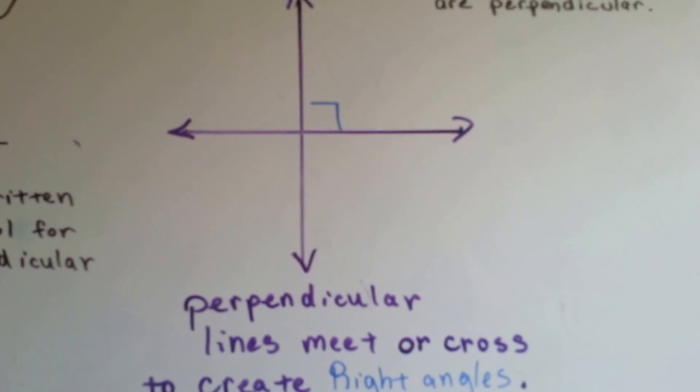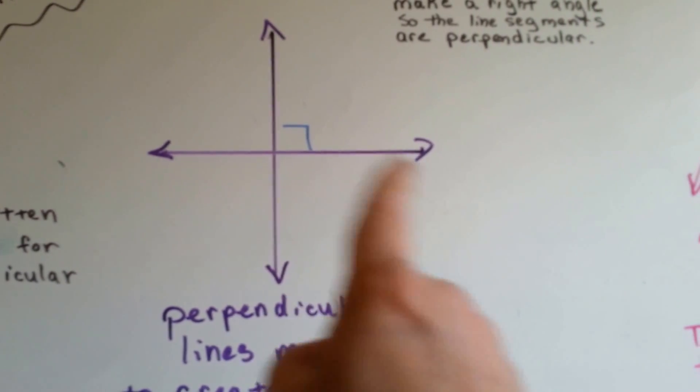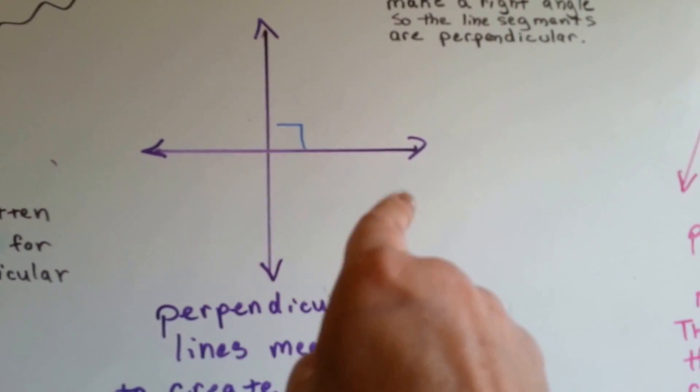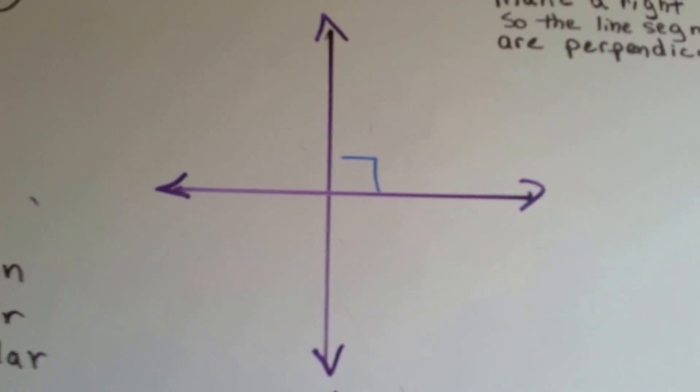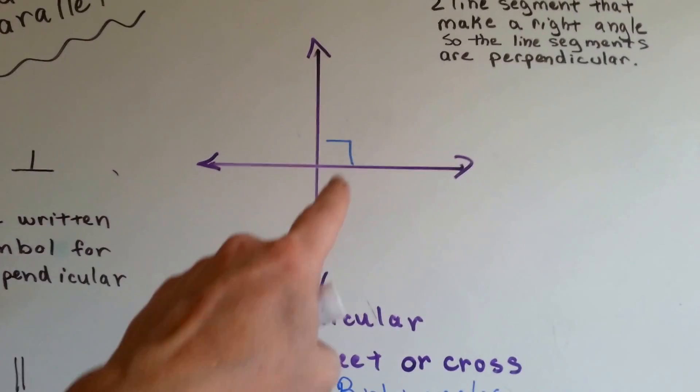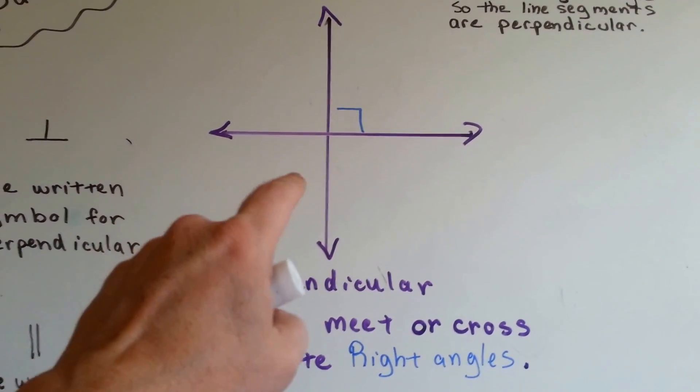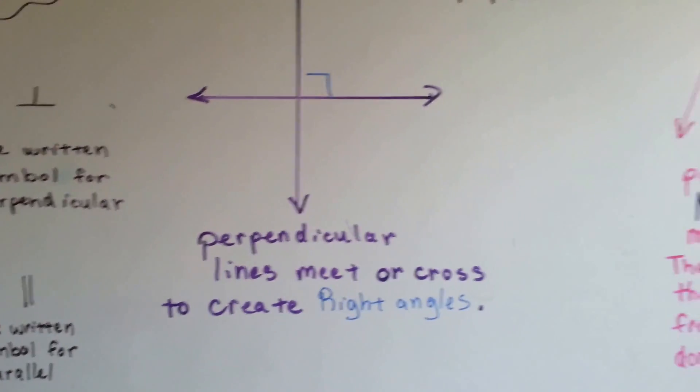So these two lines are intersecting and creating perpendicular lines, going straight up and down and straight side to side. If you look carefully, you'll notice that there are four right angles here. Not just one, two, three, four right angles.